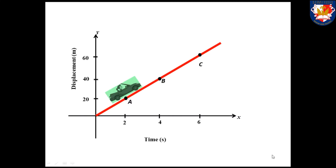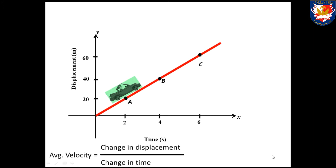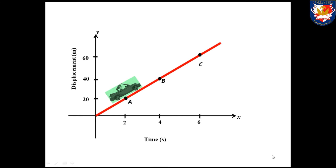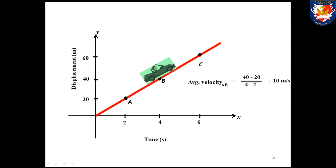Look at this following graph. This graph shows the displacement over time. Suppose that the car moved from one point to another. We will find the average velocity of the car using the formula: average velocity equals the change in displacement divided by the change in time. The change in displacement equals the change in y, and the change in time equals the change in x. So the average velocity from A to B is 40 minus 20 divided by 4 minus 2, which equals 10 metres per second.